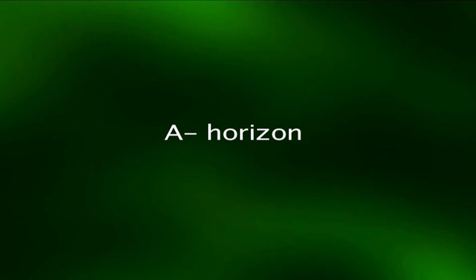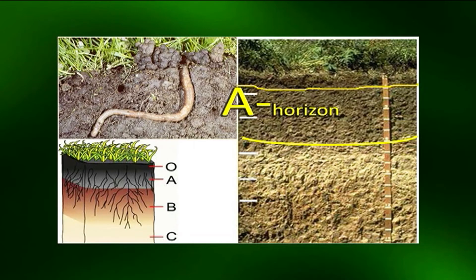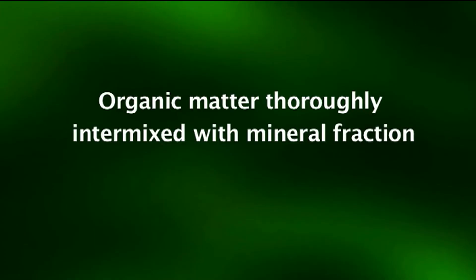The A horizon is composed of a more or less intimate mixture of mineral and organic matter. Being a surface horizon, it is the zone in which most biological activity takes place. It is the mineral horizon formed at the surface or below the O horizon. It exhibits obliteration of all or much of the original rock structure and shows either an accumulation of organic matter thoroughly intermixed with the mineral fraction.